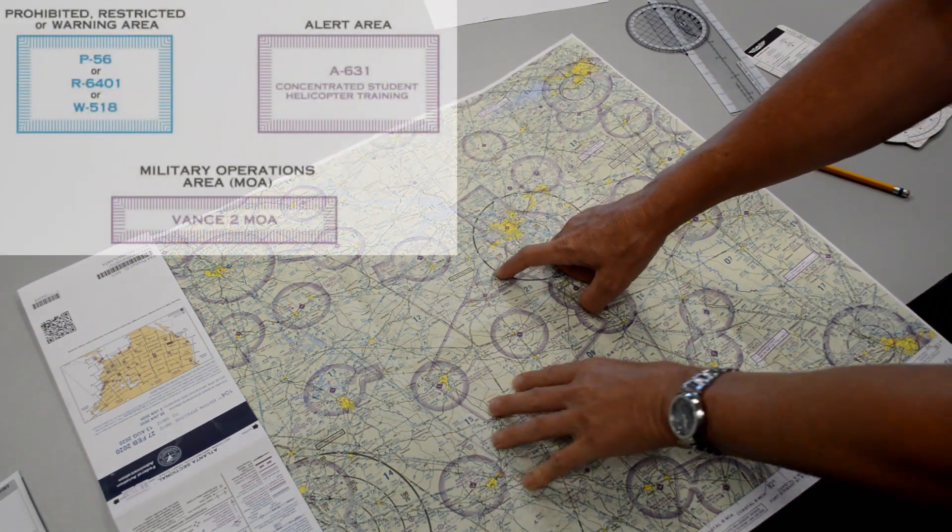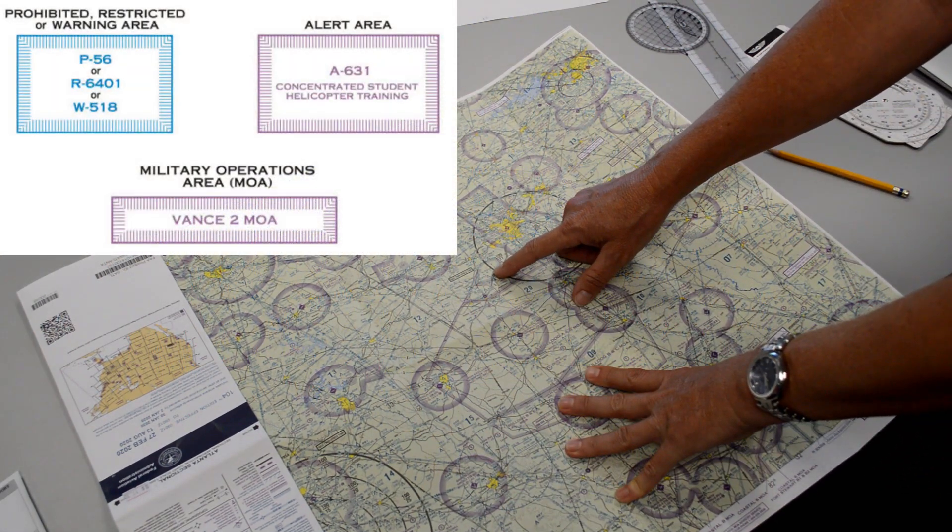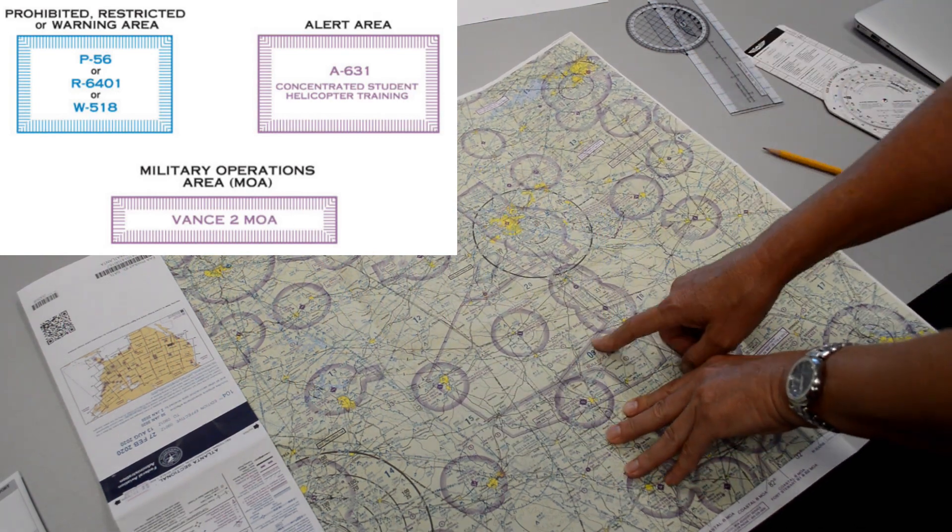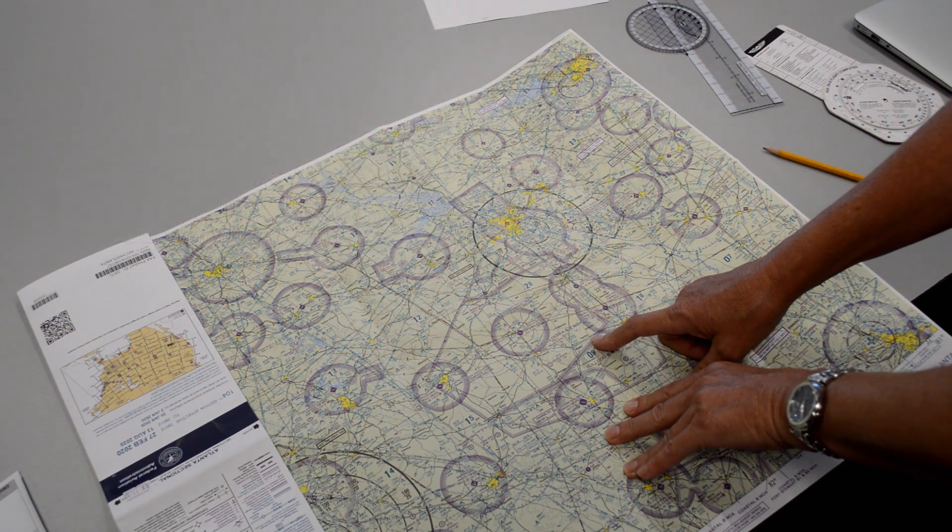Remember a restricted area is going to be in blue, a prohibited area is also going to be in blue, a reminder that we can fly through MOAs but you have to remain extra vigilant in case they're doing any kind of military training.